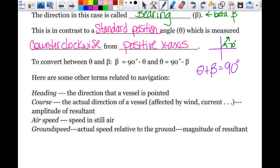Some other terms in navigation. Heading, it's the direction that a vessel is pointing, right? So I'm pointing in a certain direction. That's my heading. The course is the actual direction because your heading is where you're trying to go, but your course might be pushed off because of the current or the wind or whatever's happening. Does that make sense to you?